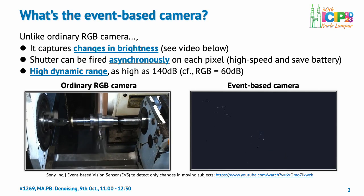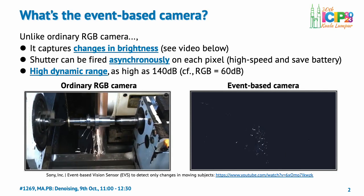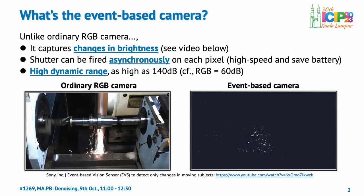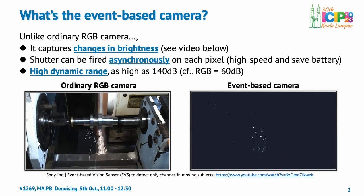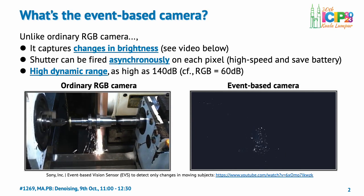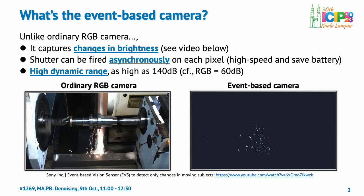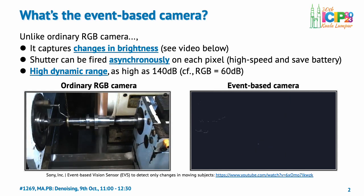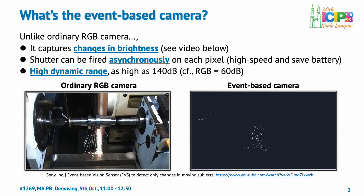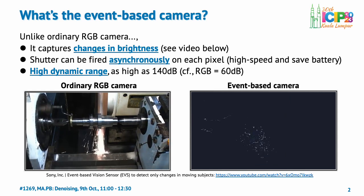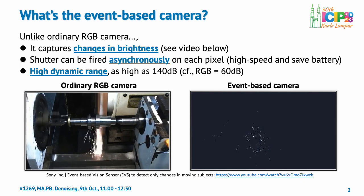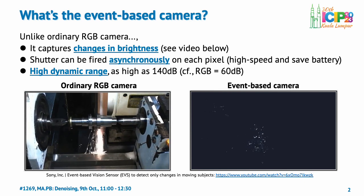First, let's introduce the concept of the event-based camera. Unlike conventional RGB cameras, an event-based camera detects changes in scene brightness as signals. A distinctive feature of event-based cameras is the asynchronous shutter operation, which activates only for pixels where brightness changes are detected.